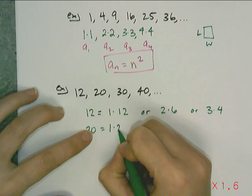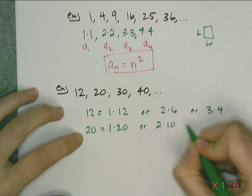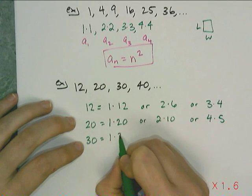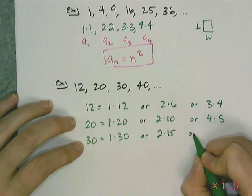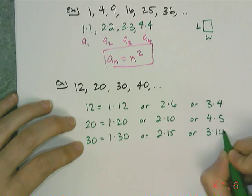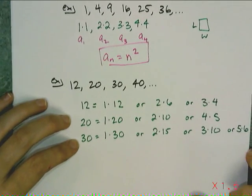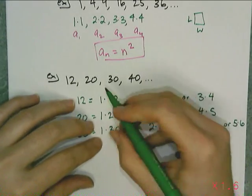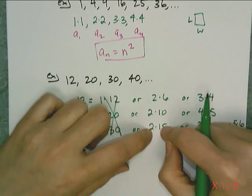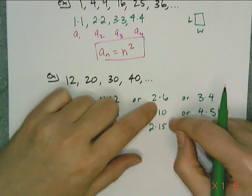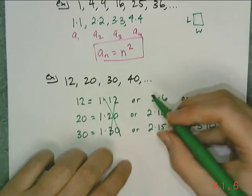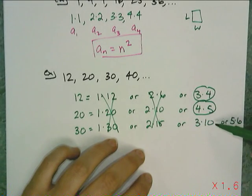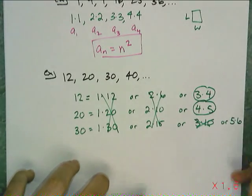For the number 20: it's either 1 times 20, or 2 times 10, or 4 times 5. And then for 30: it can be 1 times 30, 2 times 15, 3 times 10, or 5 times 6. Now the 1-times factorizations don't help at all. The 2-times ones don't really help either — the pattern 6, 10, 15 is plus 4, plus 5, which is another quadratic pattern, so not helpful. The only ones I have left are 3 and 4, 4 and 5 — and 5 and 6 do help.